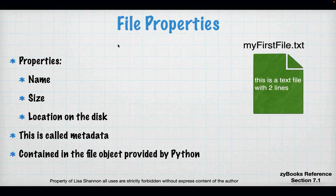So what's a file? A file has a couple of things really. A file has properties — it's got a name, it's got a size, and it's got a location on disk. This is called metadata, and it is data about the file. Every single file has metadata, and you get this by creating a file object.